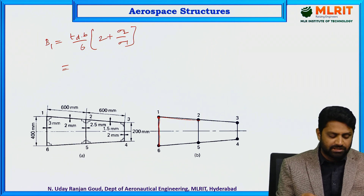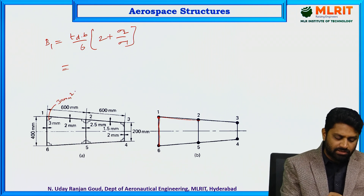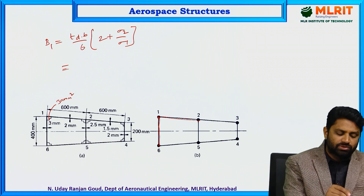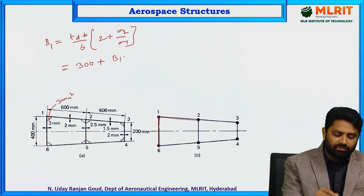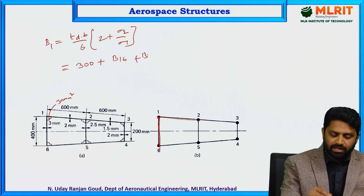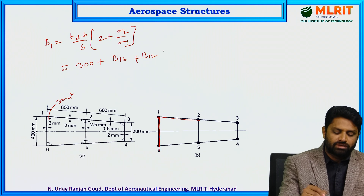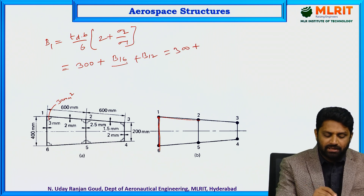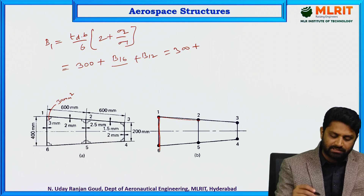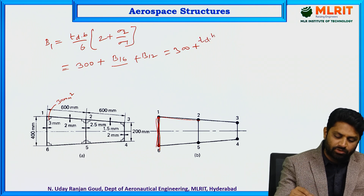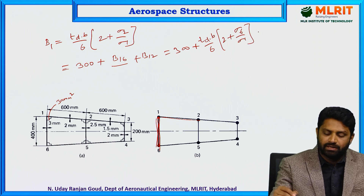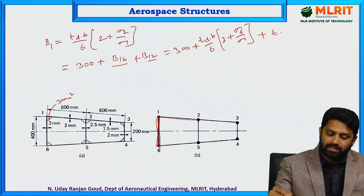For boom 1, we write: B1 = 300 + boom area contribution from panel 1-6 + boom area contribution from panel 1-2. For panel 1-6: thickness = 3 mm, panel width = 400 mm, so we write (3 × 400 / 6) × (2 + σ₆/σ₁). σ₆ is the distance from the central axis to boom 6, which is −200 mm (below axis), and σ₁ = +200 mm (above axis).